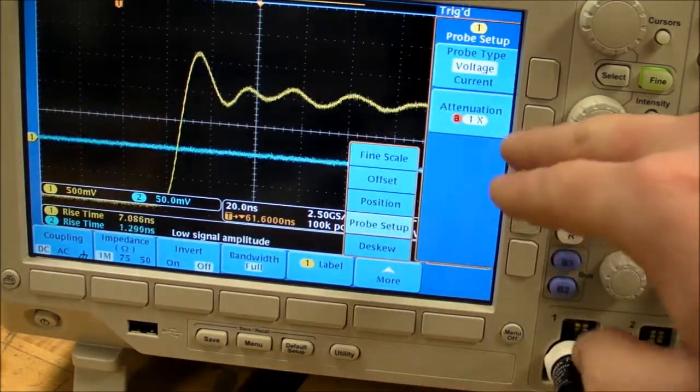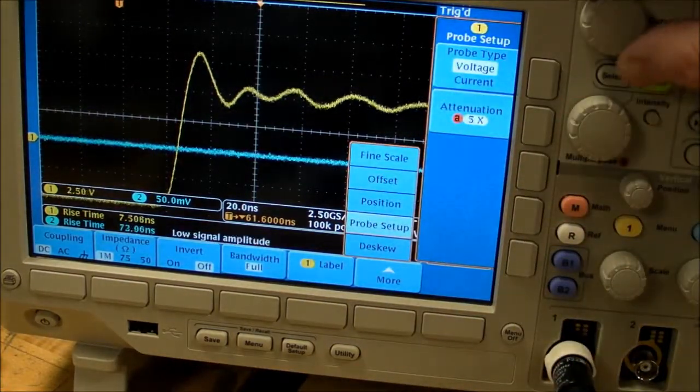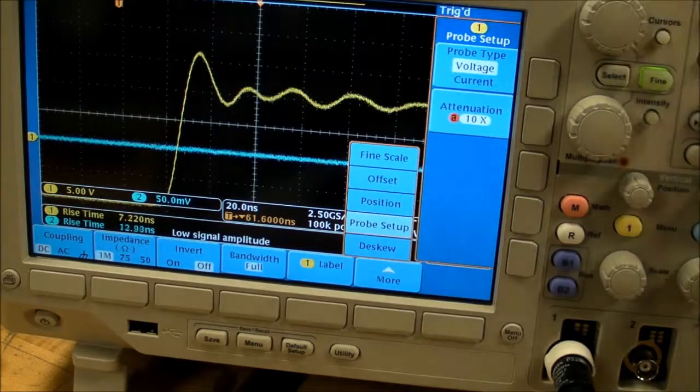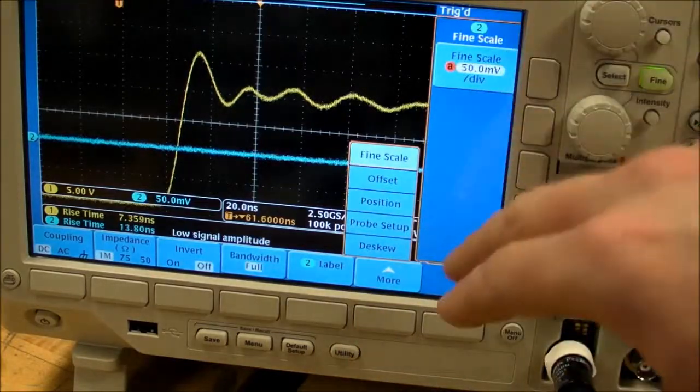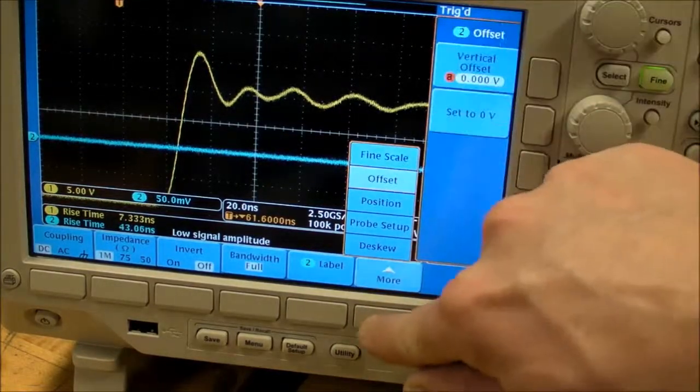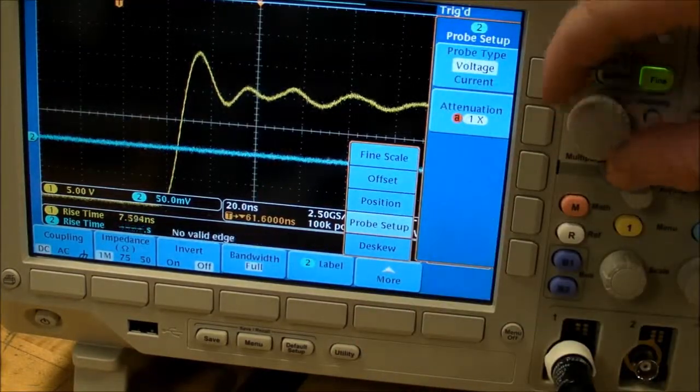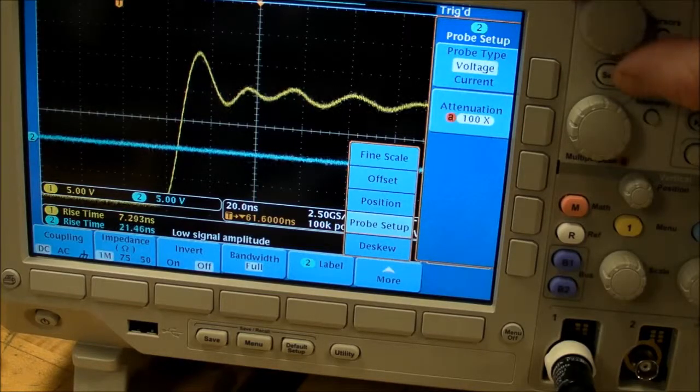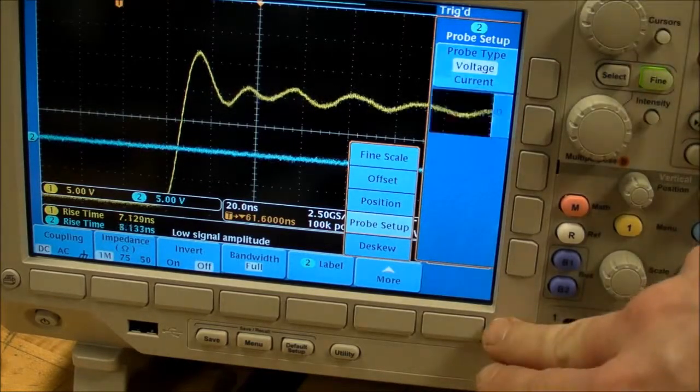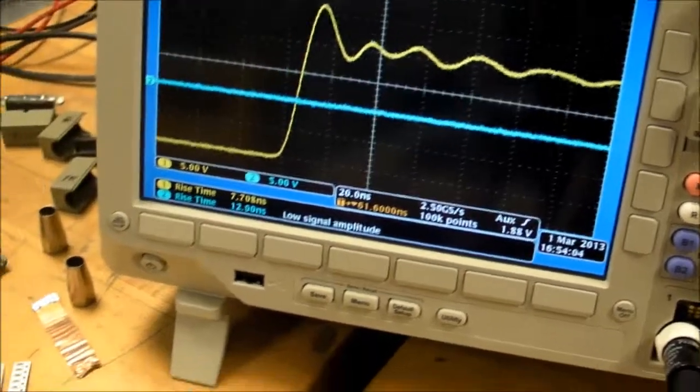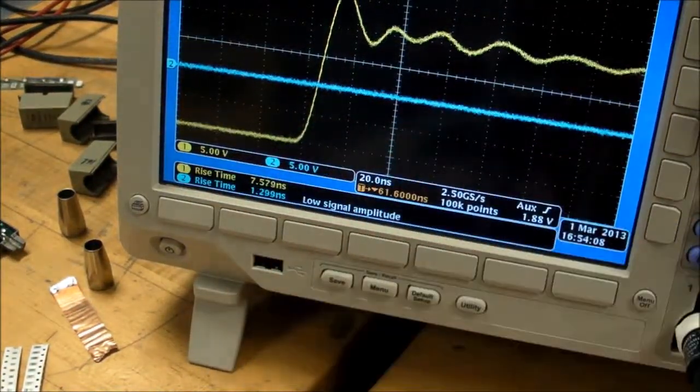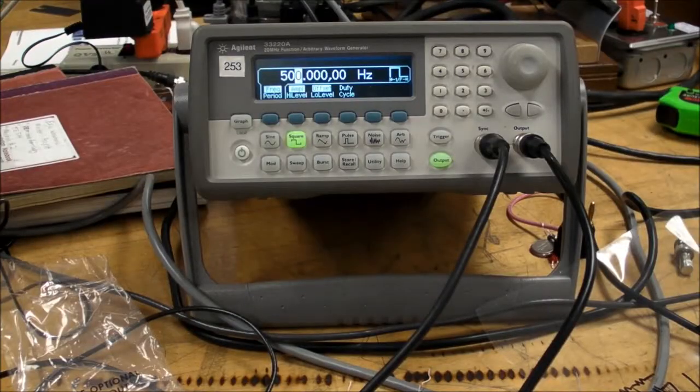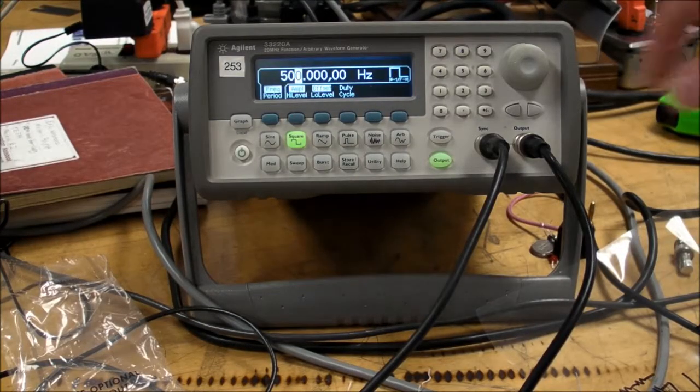Let me change channel 1 here, attenuation to 10x, because that's the probe I got in there. And then channel 2, where I'm putting my new probe, put that on 100x. And then both of these, channels 1 and 2, should be the same voltage per division. All right, that's enough talking about the probe. Let's see it working.